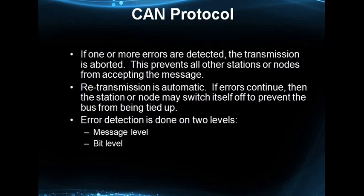The third frame type is the error frame. There are about five different types of errors detected in the CAN bus. If one or more errors are detected, the transmission is aborted. This prevents all other stations or nodes from accepting the message. So if any node in the network detects any kind of error — a bit error, acknowledgement error, CRC error, or whatever — it will immediately send an error frame.